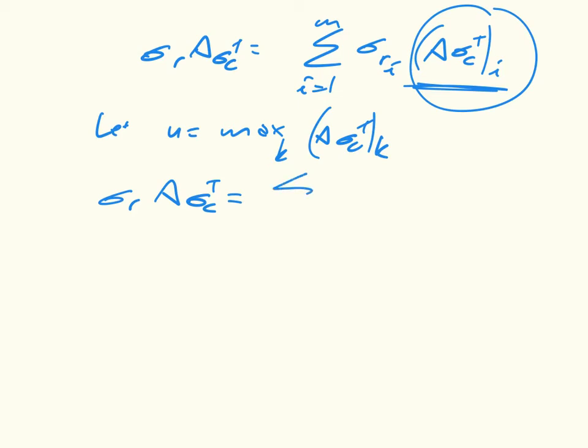Now we're going to do a relatively straightforward trick, which is just to add zero. So we're going to say that that's sigma R i times U minus U plus A sigma C T to the i. So I've just added zero here.